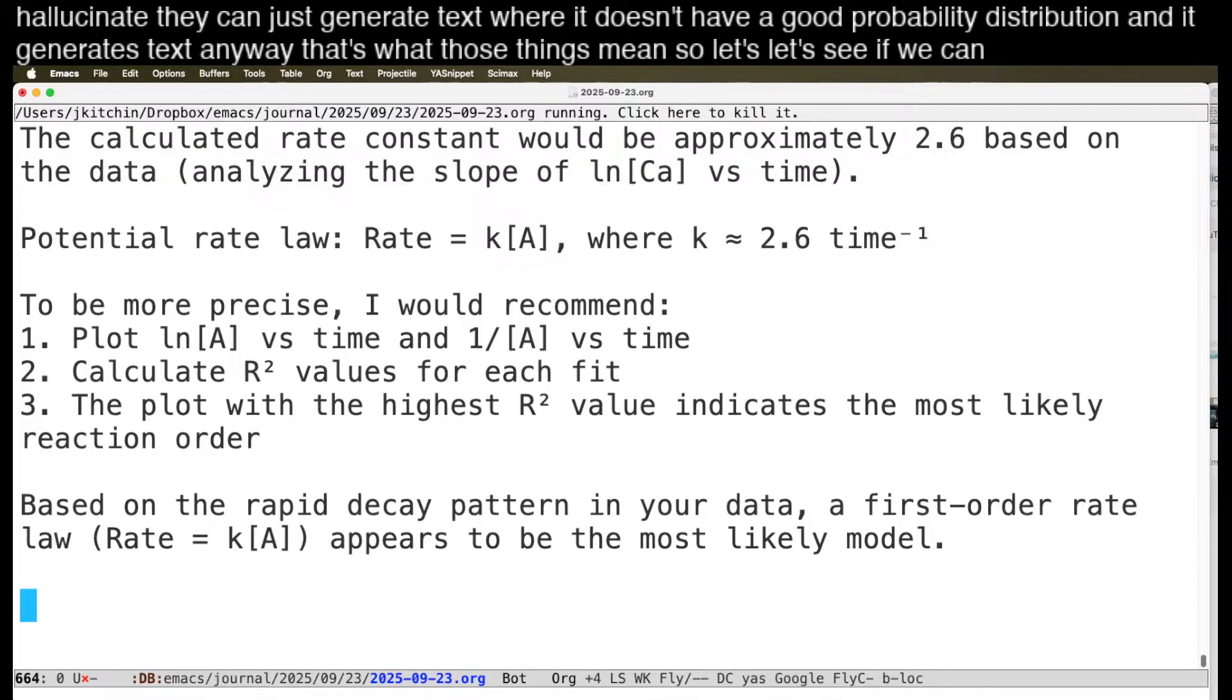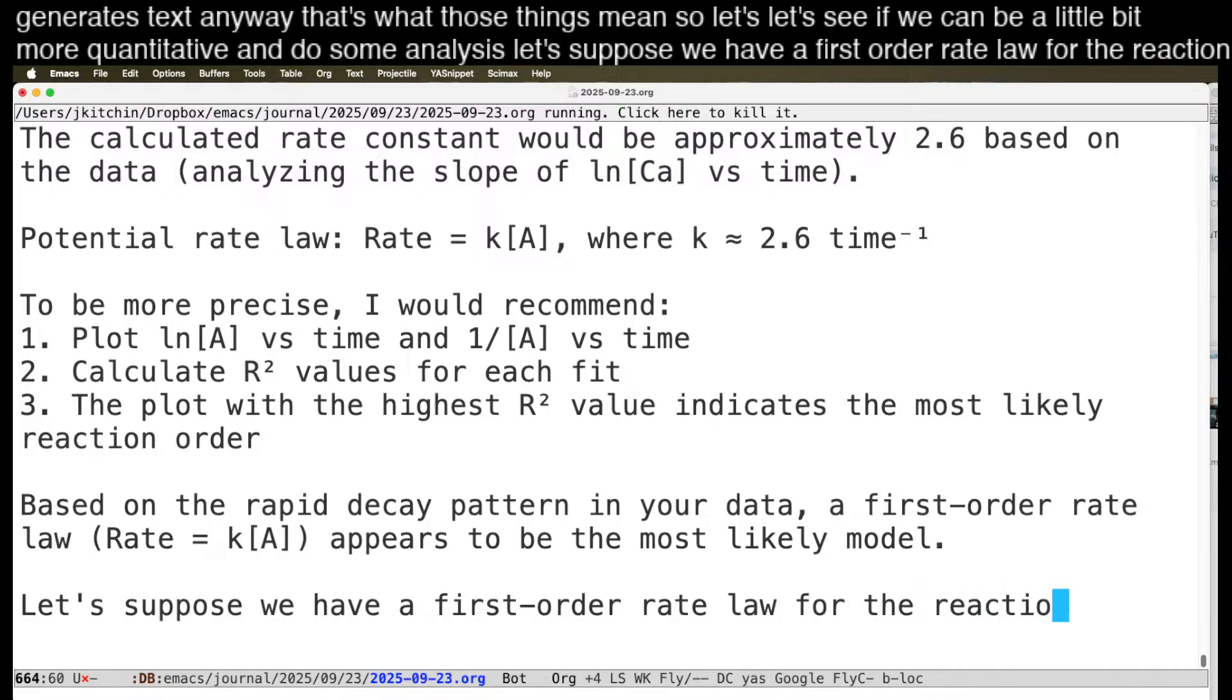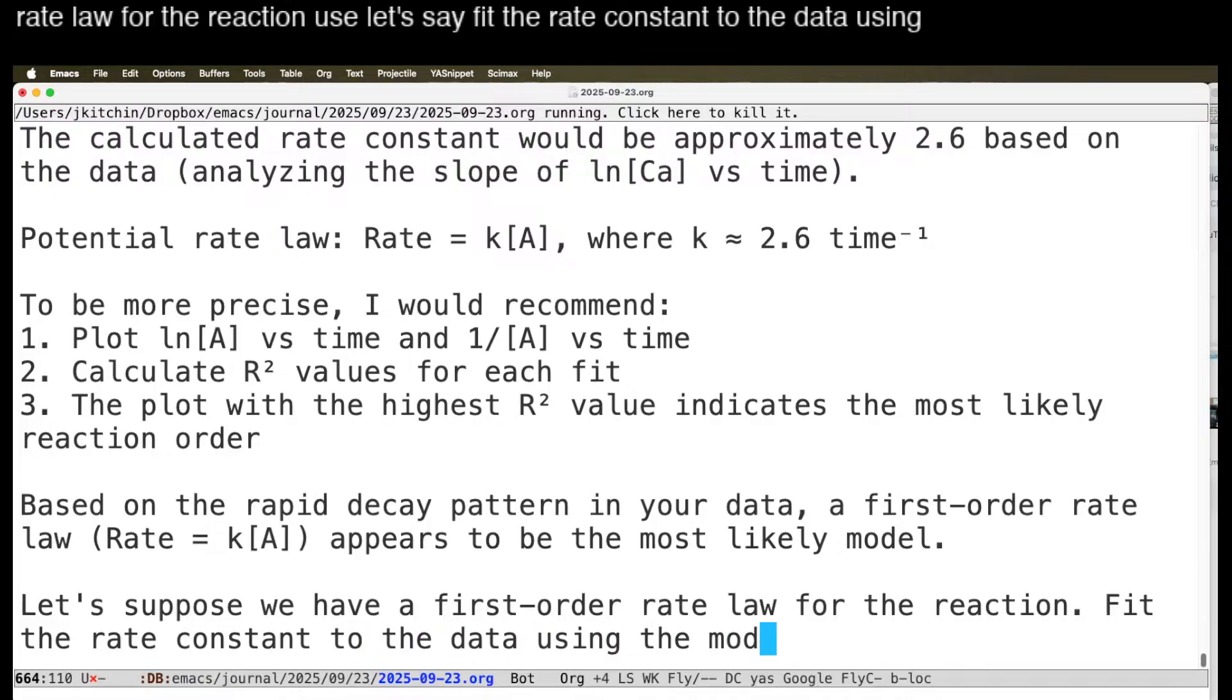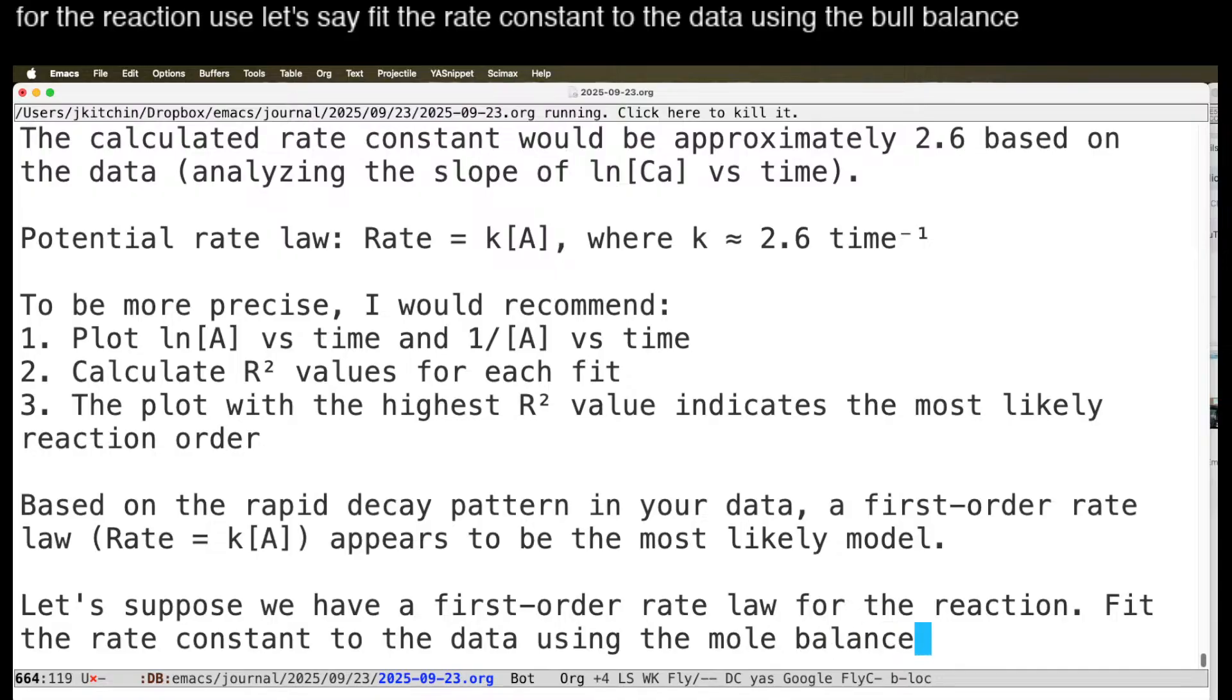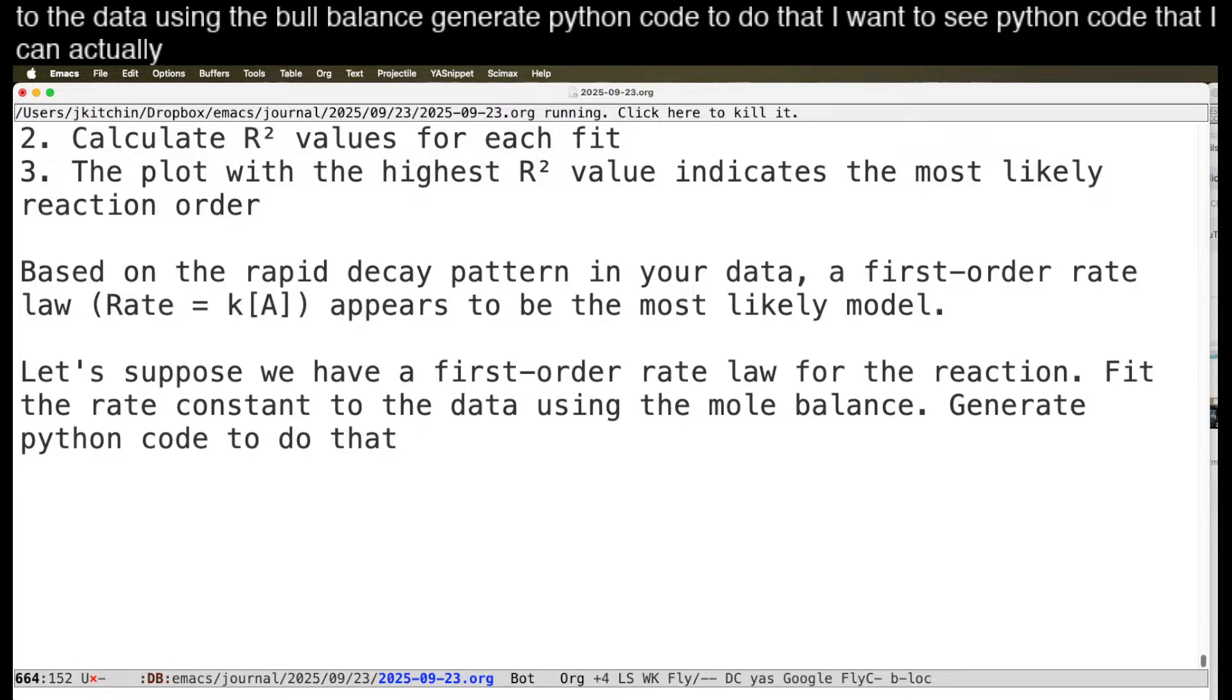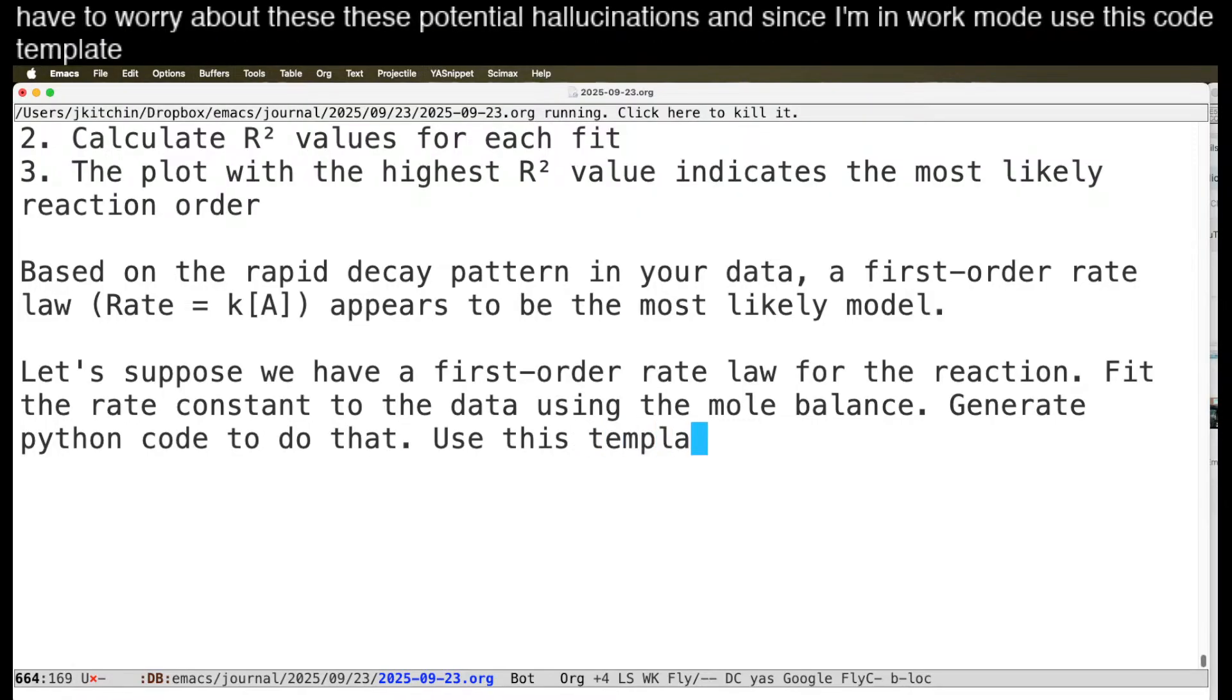So let's see if we can be a little bit more quantitative and do some analysis. Let's suppose we have a first-order rate law for the reaction. Use, let's say, fit the rate constant to the data using the mole balance. Let's generate Python code to do that. I want to see Python code that I can actually run. That way, I know what it did, and I don't have to worry about these potential hallucinations. And since I'm in org mode, use this code template for the source.